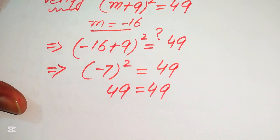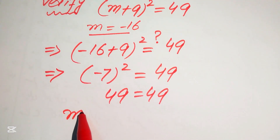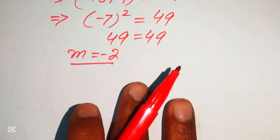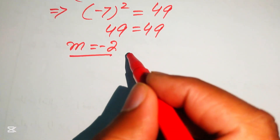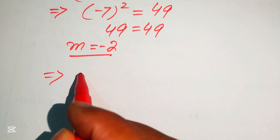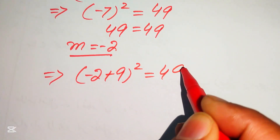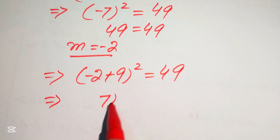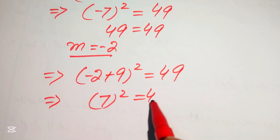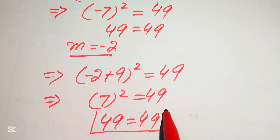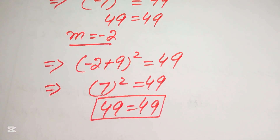This confirms m = −16 satisfies the equation. For m = −2: (−2 + 9)² = 7² = 49 = 49. ✓ This confirms m = −2 also satisfies the given equation. These are the final answers. Thank you for watching — please subscribe to my channel for more exciting videos.